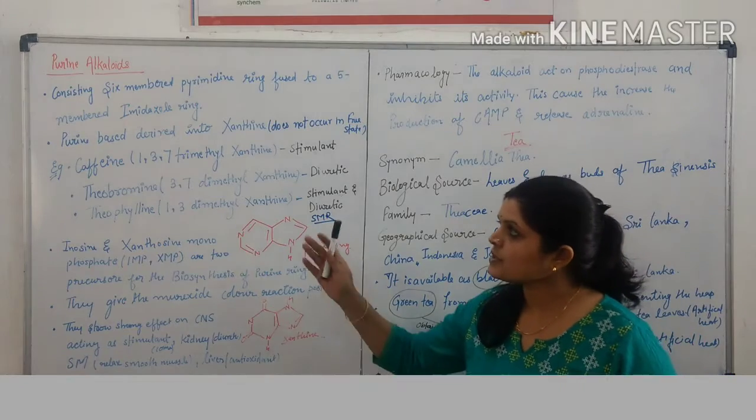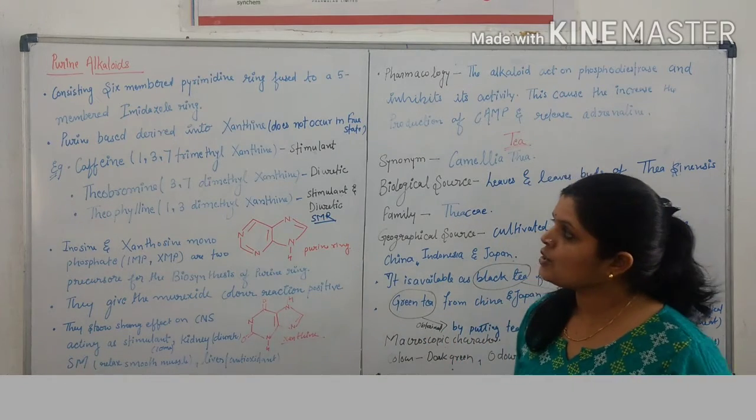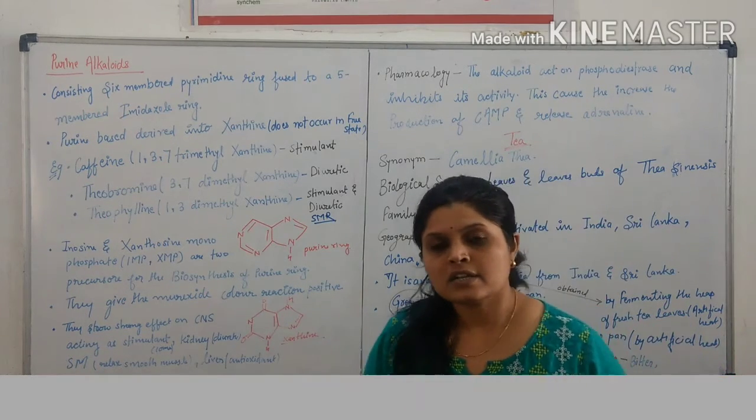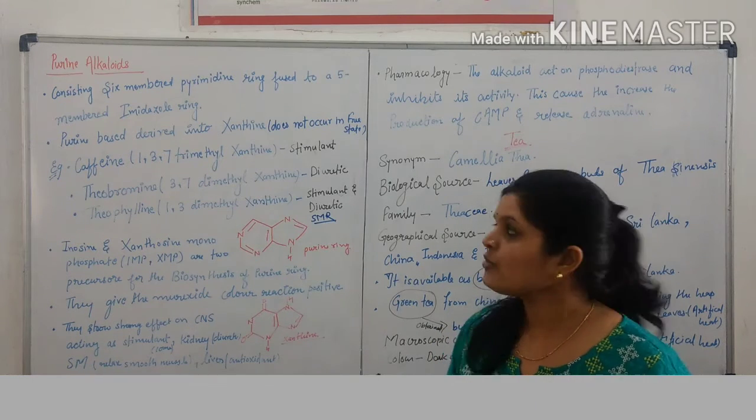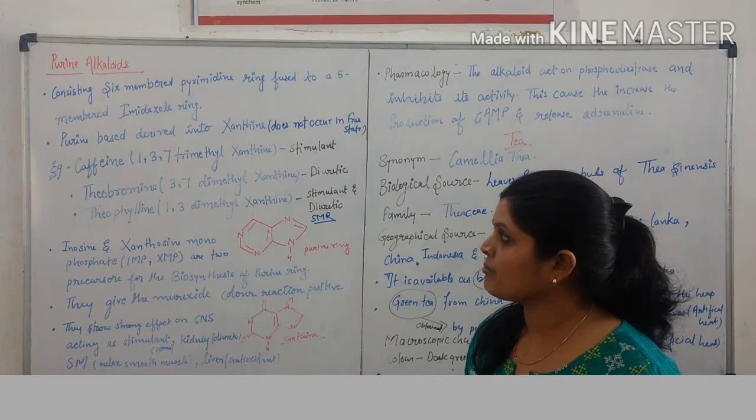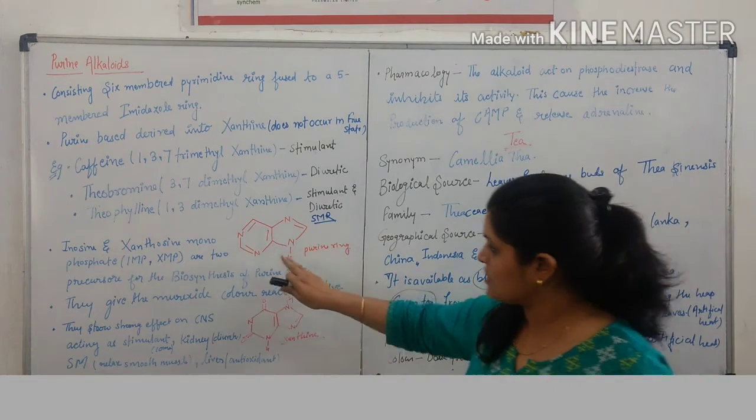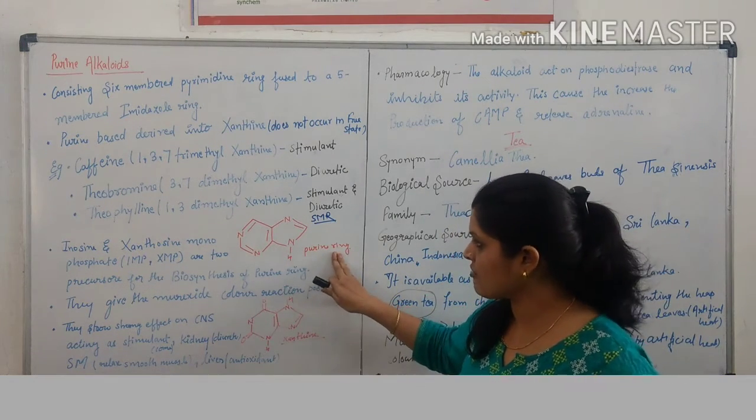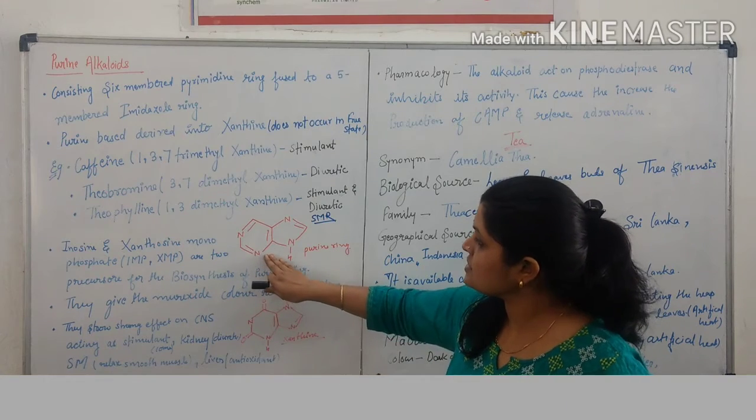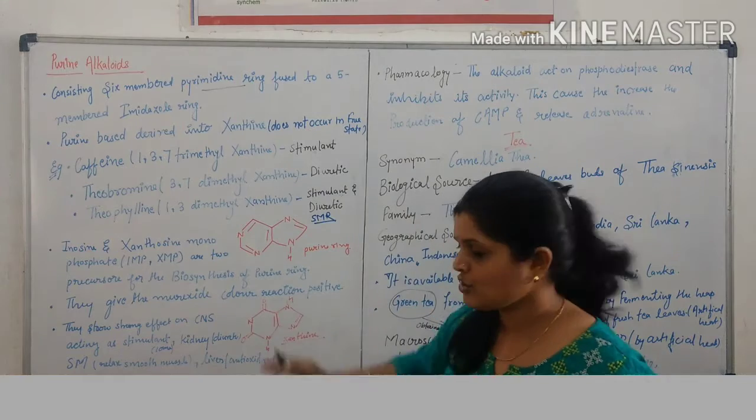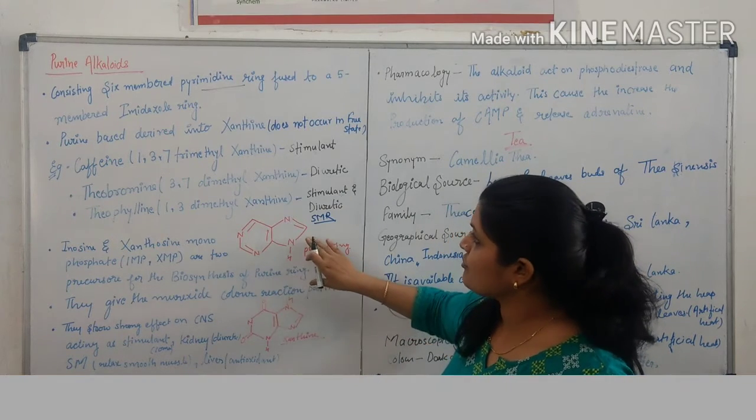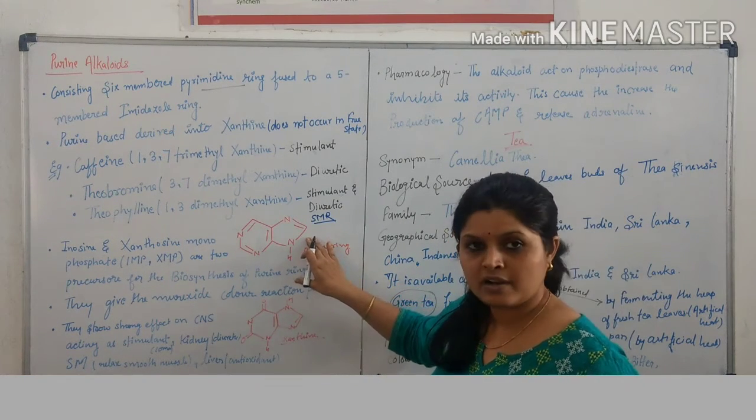Let us start from Purine Alkaloids. Purine Alkaloids consists of a 6-member pyrimidine ring fused to a 5-member imidazole ring. This is the structure of Purine Alkaloids - a 6-member pyrimidine ring fused with a 5-member imidazole ring.